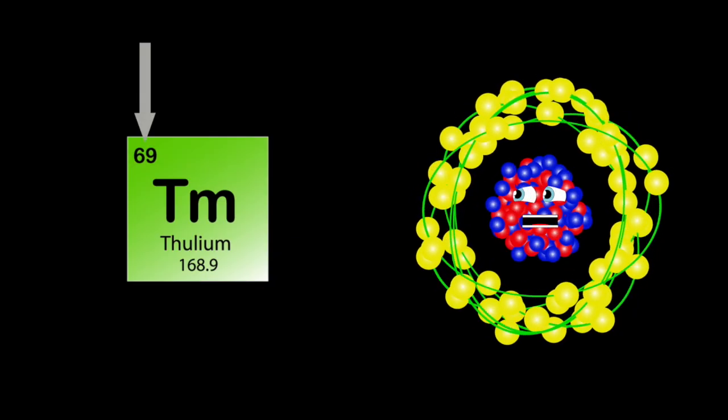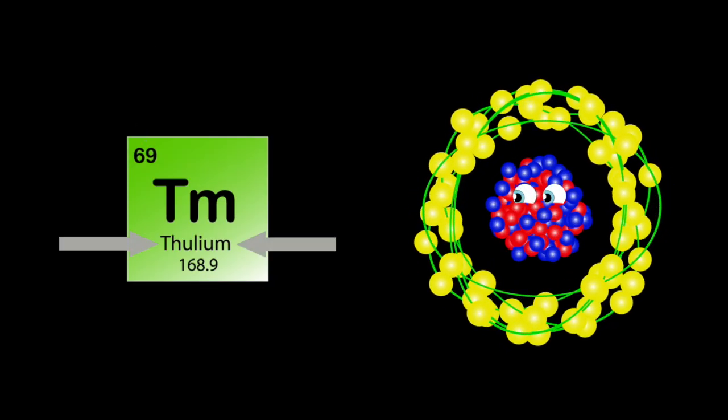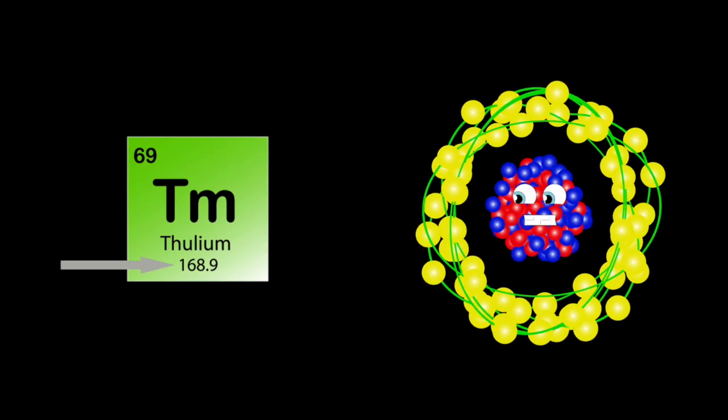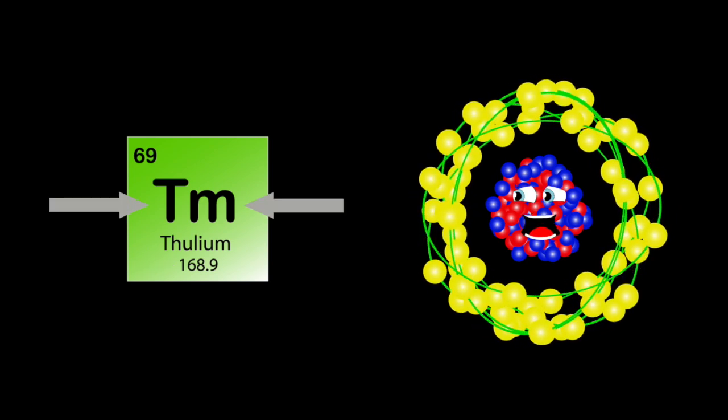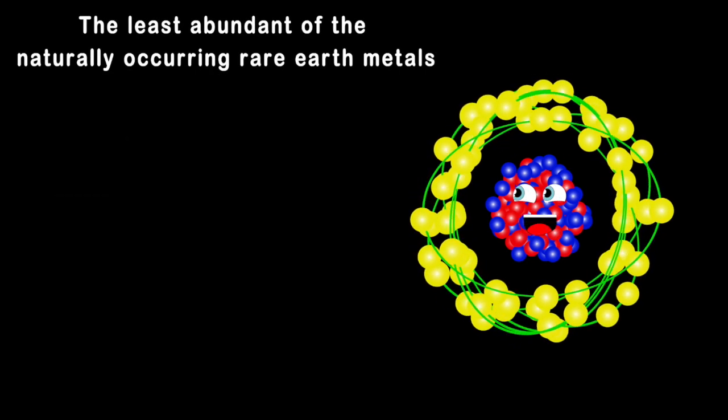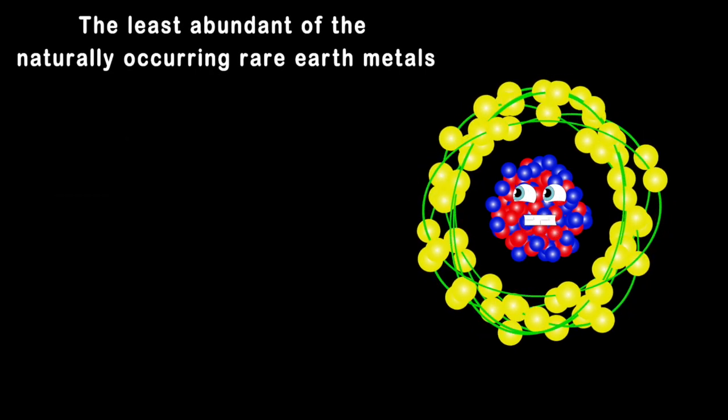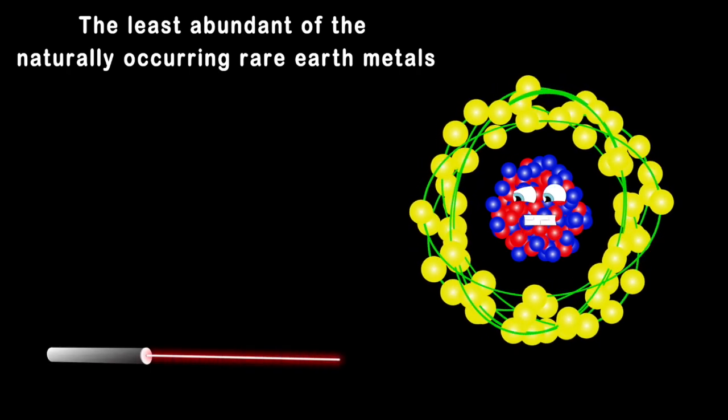My atomic number's 69, I am thulium, my atomic mass is 168, and my symbol is TM. I am the least abundant of the naturally occurring rare earth metals, I've been used to create lasers, I have one isotope that's stable.